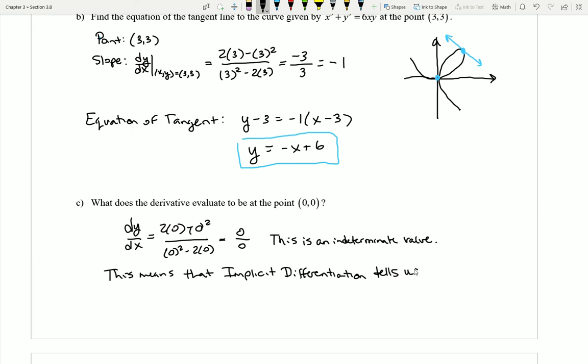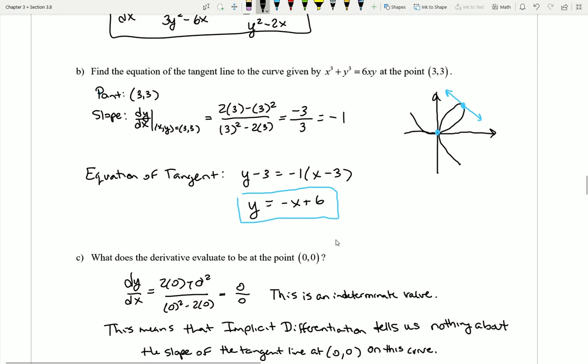This means that implicit differentiation tells us nothing about the slope of the tangent line at (0,0) on this curve. This is an instance where the implicit differentiation idea is failing.